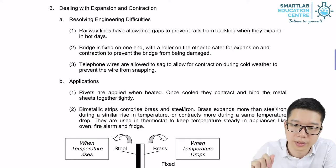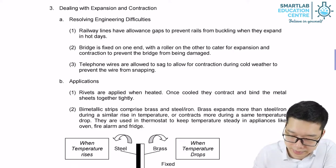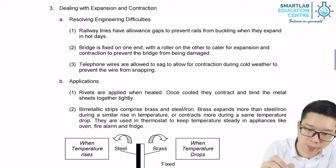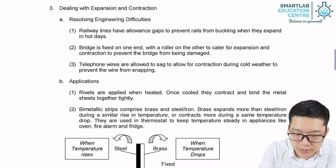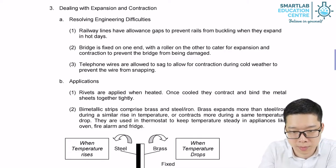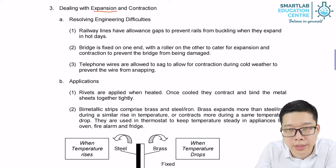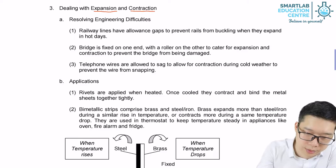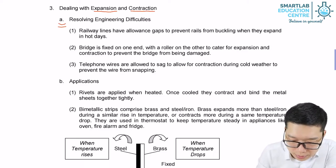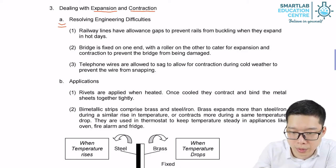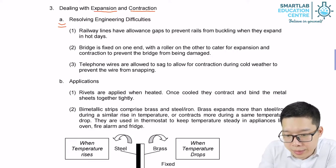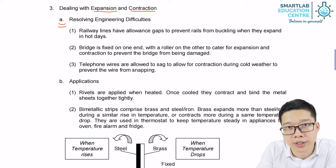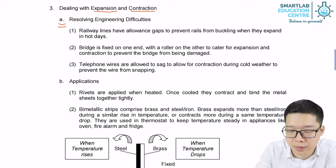Today we are going to discuss the second part of the effects of heat energy. For the last part, we learned that when a small amount of heat is absorbed, matter will expand, and when heat is given out, matter will contract. For the first three examples, we will look at how we prevent expansion and contraction from damaging our daily life.